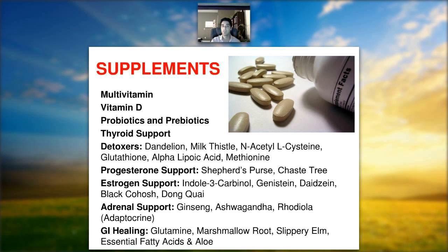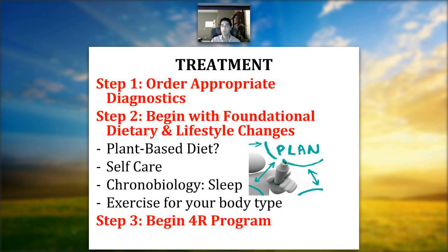To recap: get appropriate diagnostics, make dietary and lifestyle changes, and begin the 4R program. This is a slam dunk for thyroid conditions. For mild to moderate cases, this approach can make a huge difference and possibly achieve reversal. For severe or long-standing cases, or those on thyroid medication for a long time, you may not be able to come off medication entirely, but you will decrease the amount needed and slow future increases.